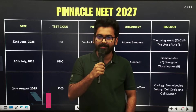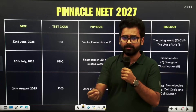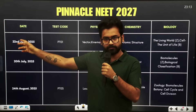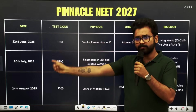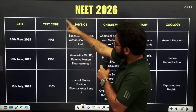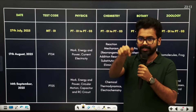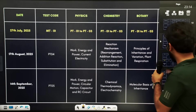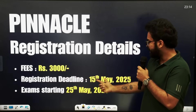Now Neeraj sir will discuss the syllabus of Pinnacle. In this particular Pinnacle, we have batches for the 2027 class 11 as well as for class 12 students. There are 2026 appearing groups. The 2027 exam batch starts on 22nd June 2025. A PDF of the syllabus will be given in the video description box and the first WhatsApp group. For class 12, the first exam is 25th May, very soon. The registration fee for class 11 or class 12 is ₹3000, and the registration deadline is 15th May.